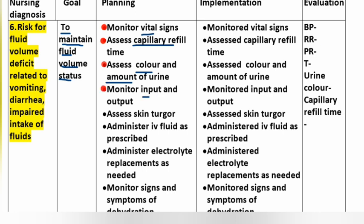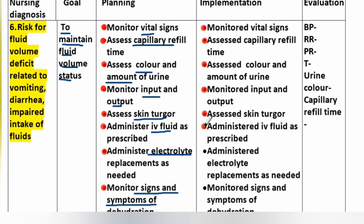Assess color and amount of urine. Monitor input and output. Assess skin turgor. Administer IV fluid as prescribed. Administer electrolyte replacement as needed. Monitor signs and symptoms of dehydration. Implementation: monitored vital signs. Assessed capillary refill time. Assessed color and amount of urine. Monitored input and output. Assessed skin color. Administered IV fluid as prescribed. Administered electrolyte replacement as needed.